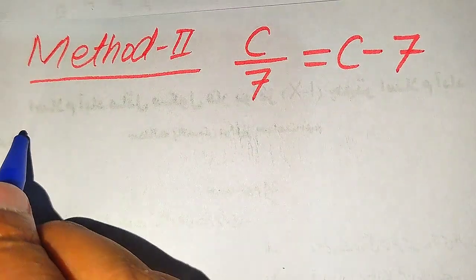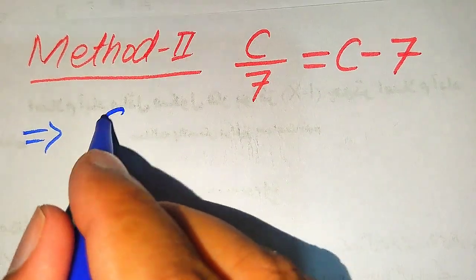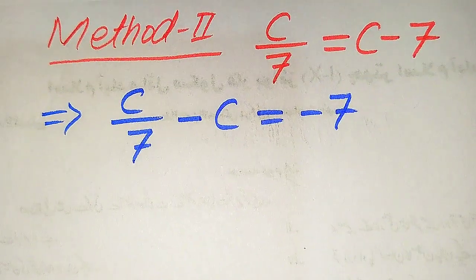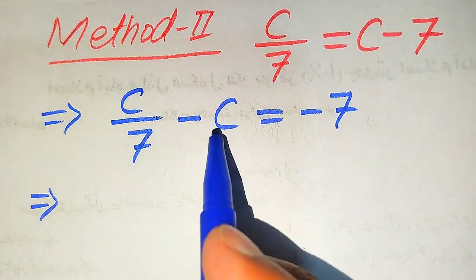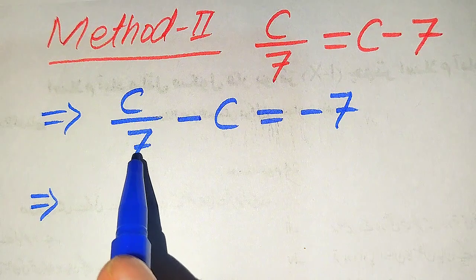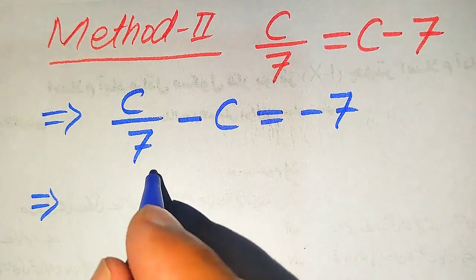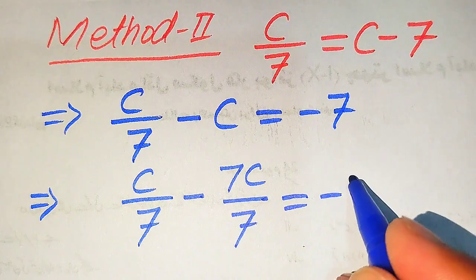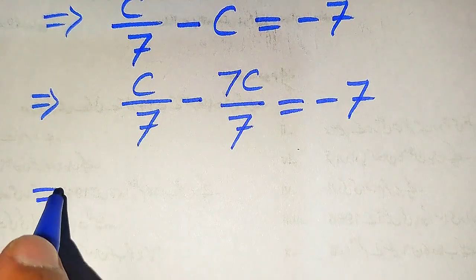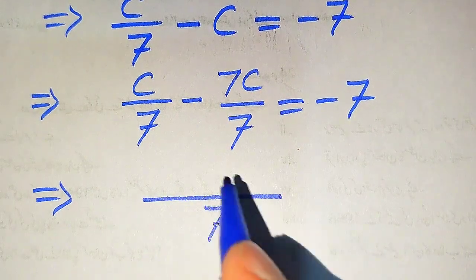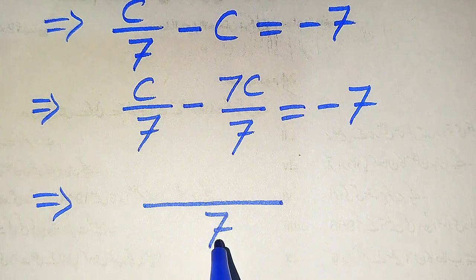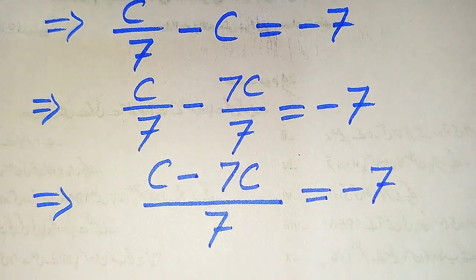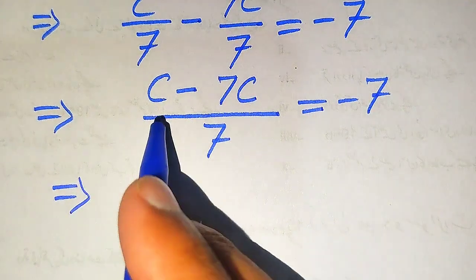In Method 2, we move the variable terms to the left-hand side, giving C/7 minus C equals minus 7. To make the denominators the same, we multiply and divide the second term by 7, writing it as 7C/7. Taking the LCM, the denominator is 7, so we get (C minus 7C)/7 equals minus 7.